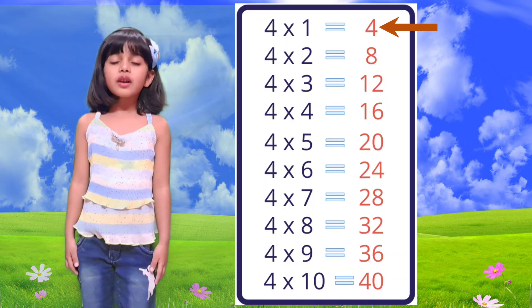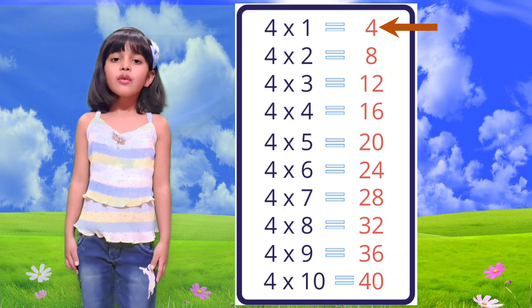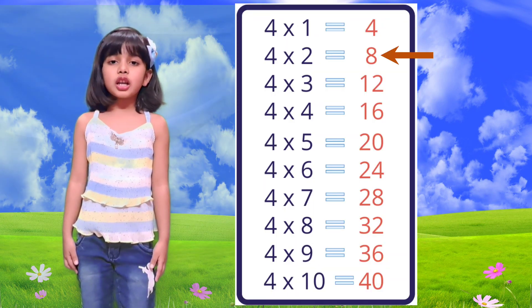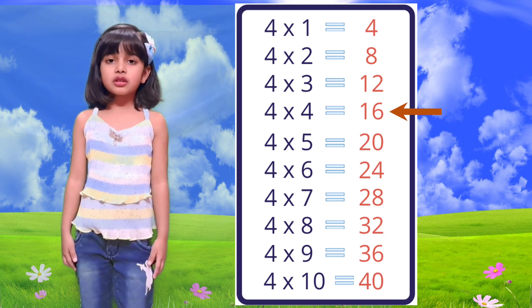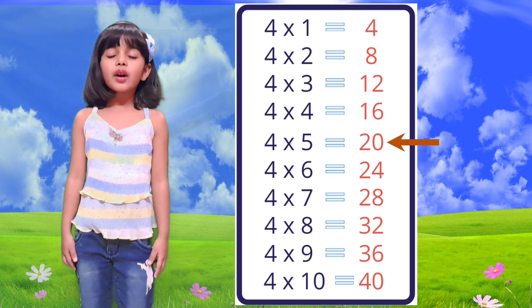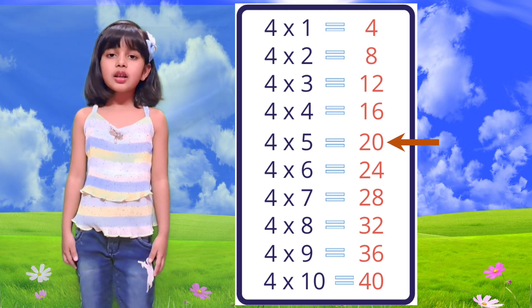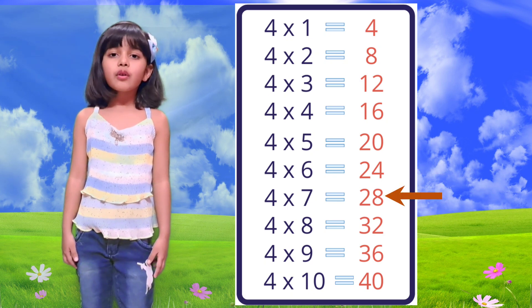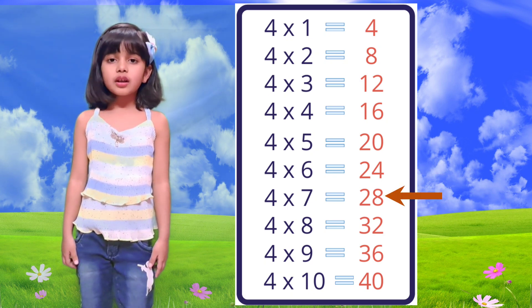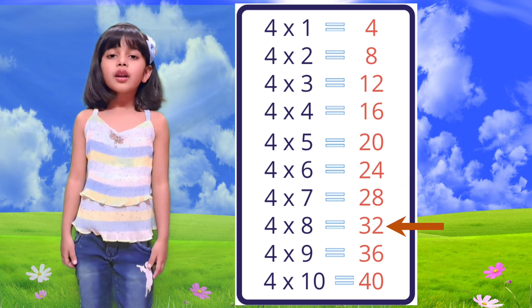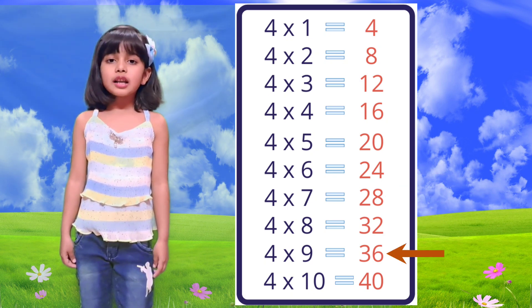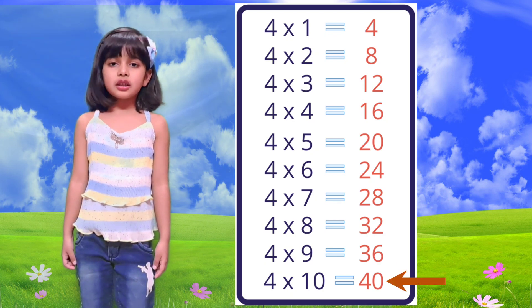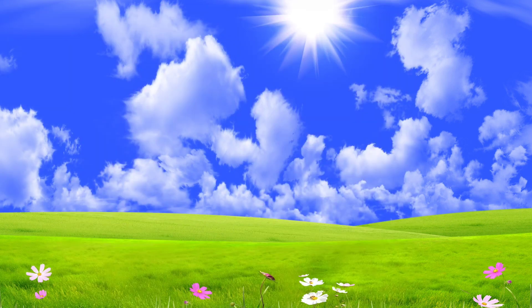Table of 4. 4 1 is 4, 4 2 is 8, 4 3 is 12, 4 4 is 16, 4 5 is 20, 4 6 is 24, 4 7 is 28, 4 8 is 32, 4 9 is 36, 4 10 is 40.